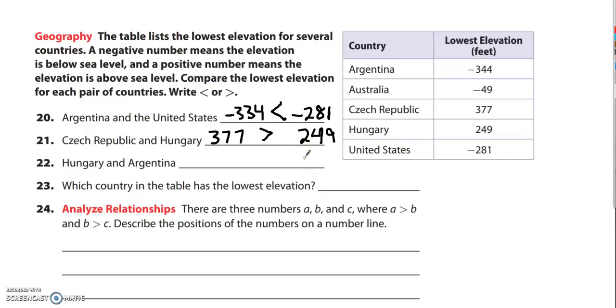And then the third one, Hungary is at positive 249 and Argentina is at negative 344. And while 344 seems like it's bigger than 249, obviously a positive 249 would be greater than any number in the negatives, negative 344.